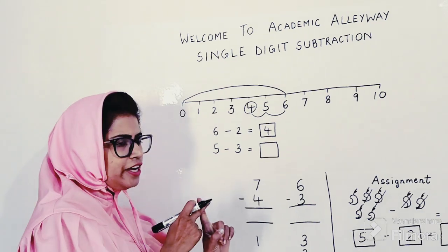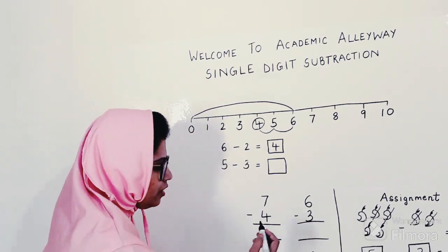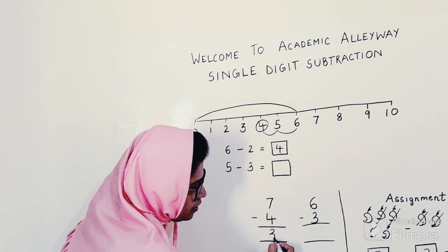Number 4 is in my mind. Now count after 4 till 7. How will you count? 5, 6, and 7. What am I getting over here? 3. So 3 is my answer.